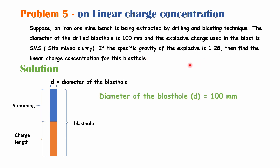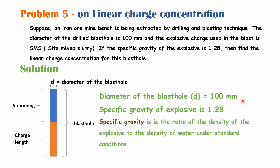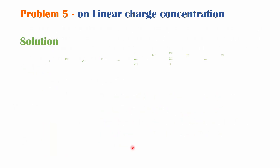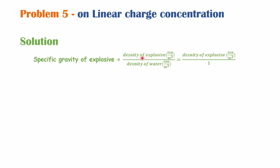The specific gravity of the explosive = density of explosive ÷ density of water. Since density of water = 1, the density of the explosive equals its specific gravity × 1. Also remember: 1 ton per meter cube equals 1 gram per cc. This is because 1 ton = 10⁶ grams and 1 meter cube = 10⁶ centimeter cube, so they cancel out. Always remember 1 ton/m³ = 1 g/cm³.